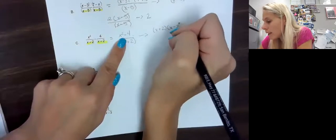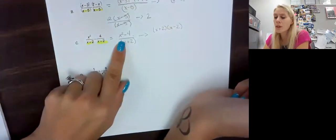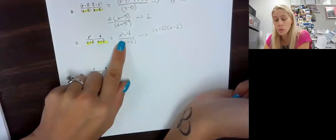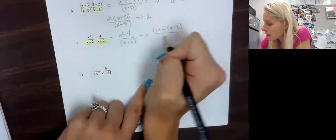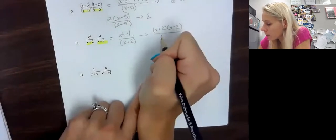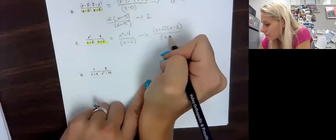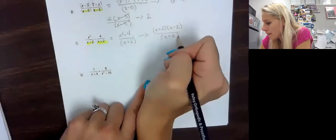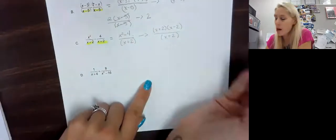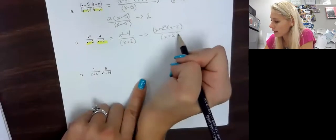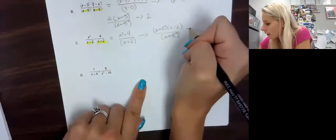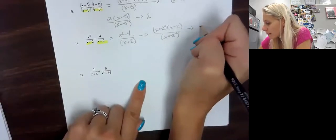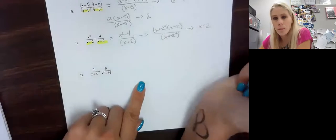If you need help with that, the rules are on your last notes, section 6.3, which shows the difference of squares. Now why do we do this? Because now I can cross out the x plus 2's, and our final answer is just x minus 2.